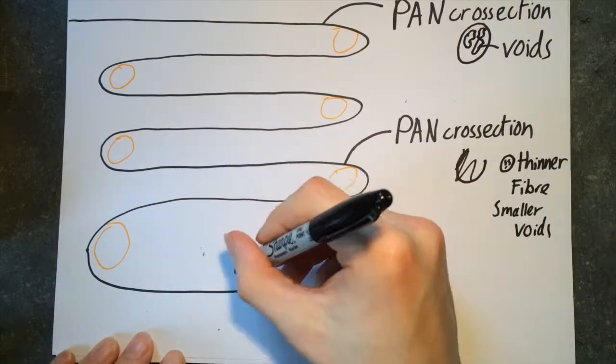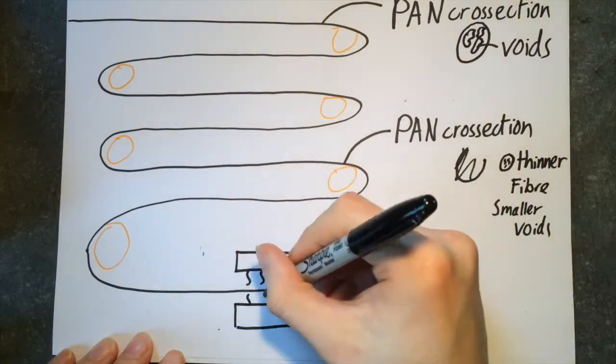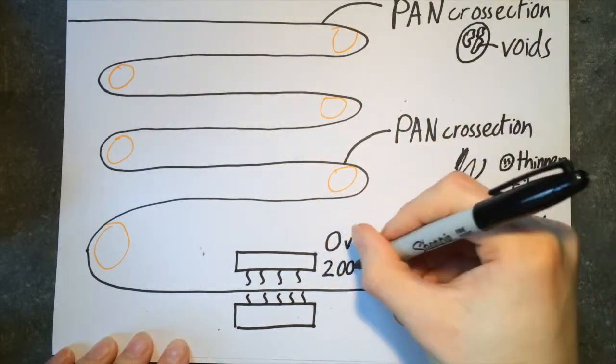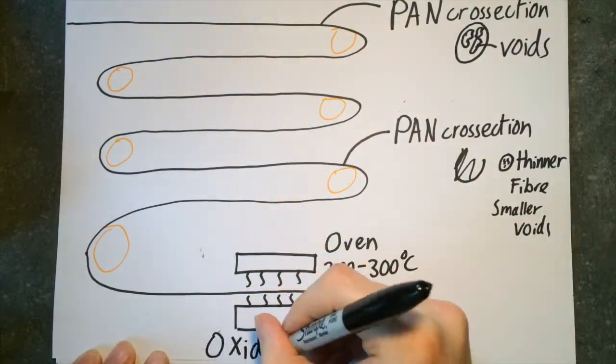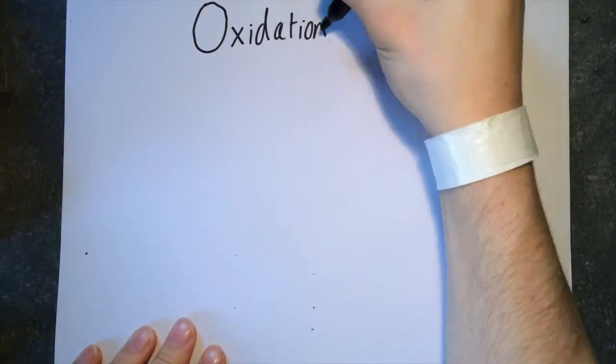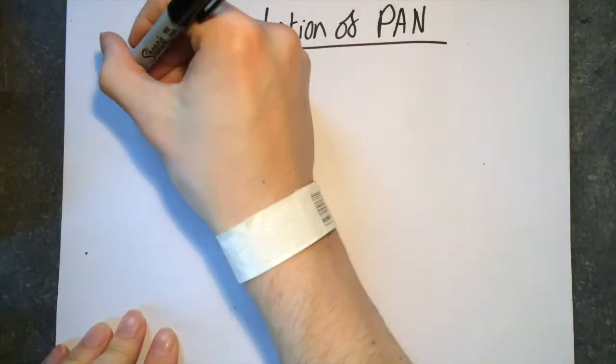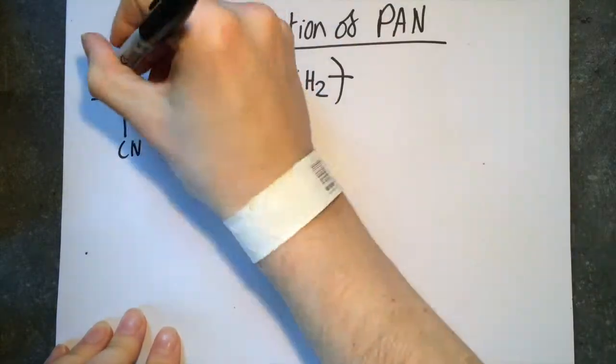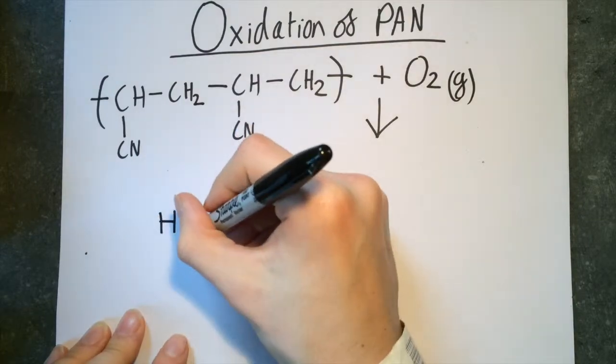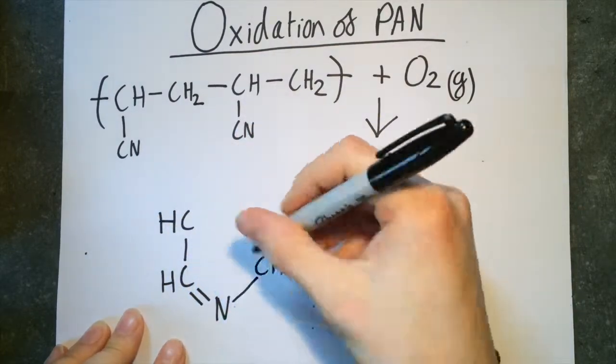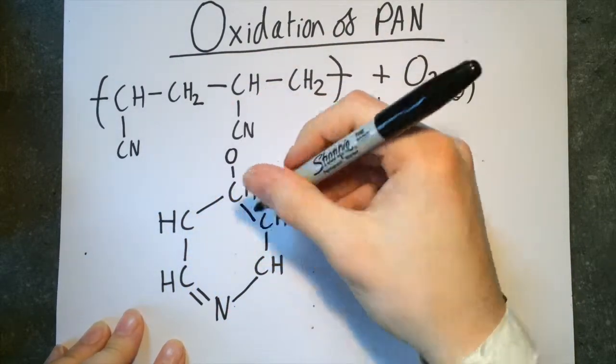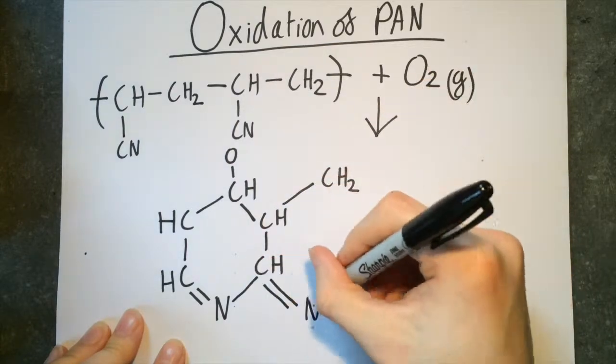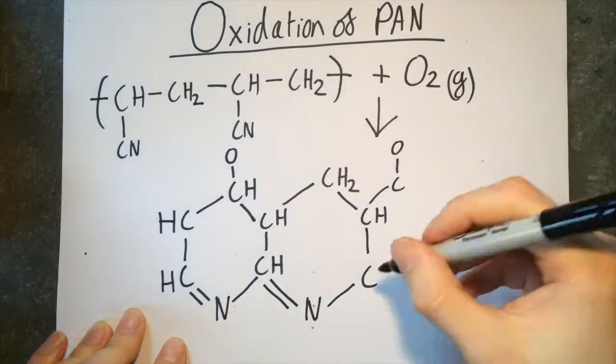Fibers are then passed through a number of ovens causing oxidation and carbonization of the PAN. The first oven is at a temperature of 200 to 300 degrees Celsius. This oven is not inert. This causes oxygen molecules to react with the PAN via oxidation, causing the polymer chains to cross-link. This increases the fiber density of the PAN from 1.18 grams per cubic centimeter to 1.38 grams per cubic centimeter.